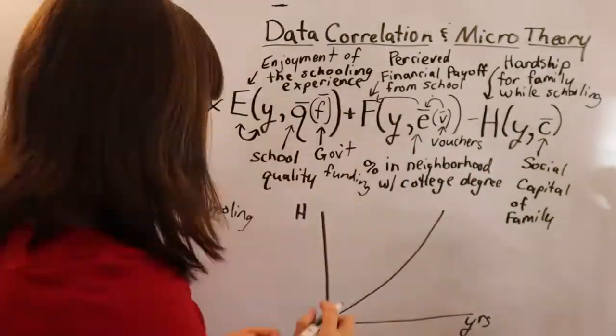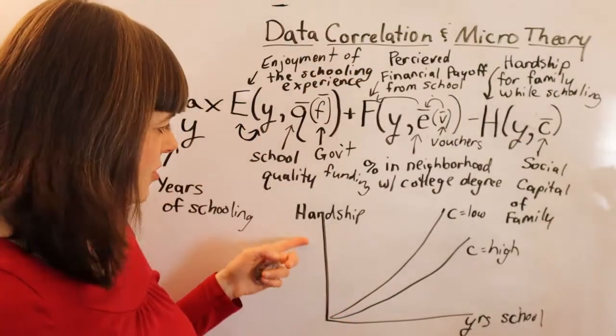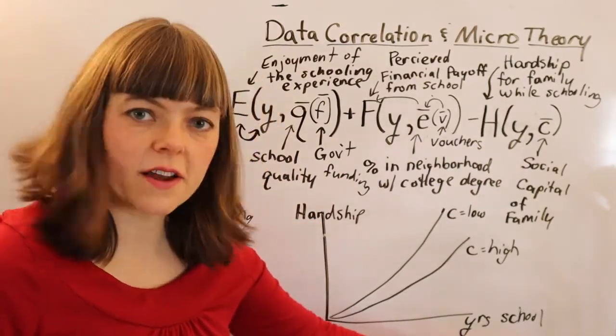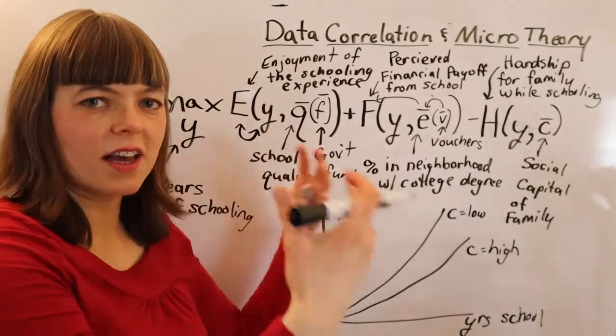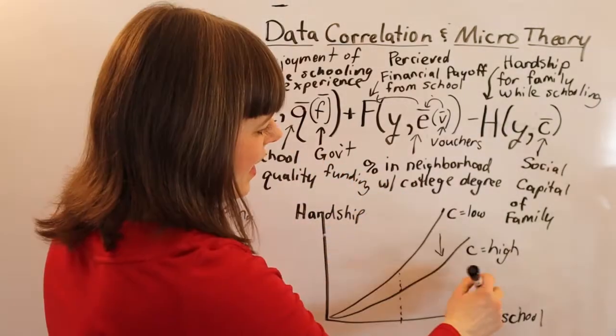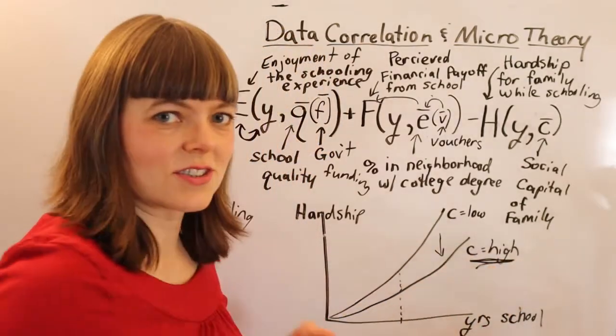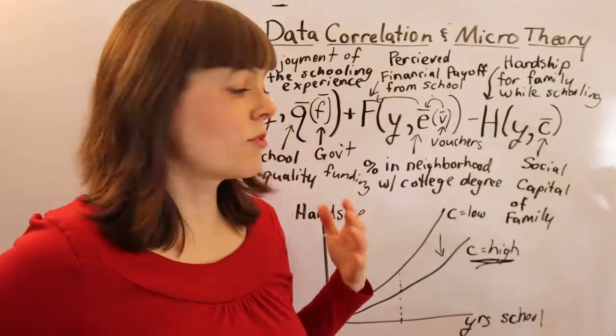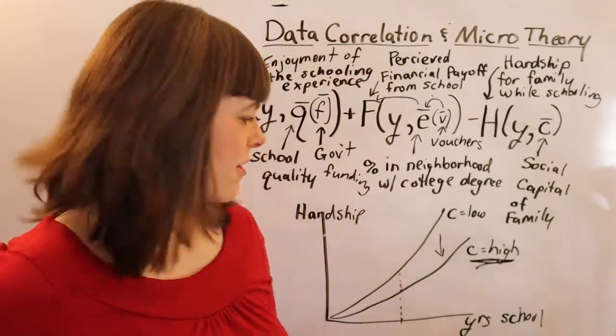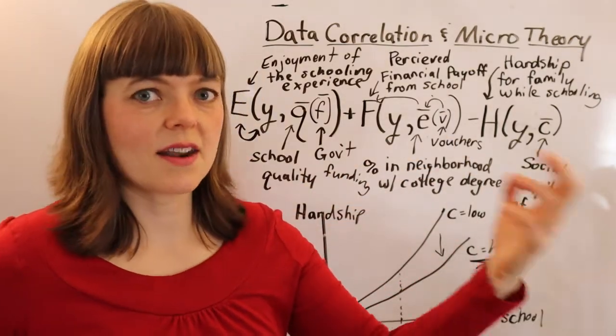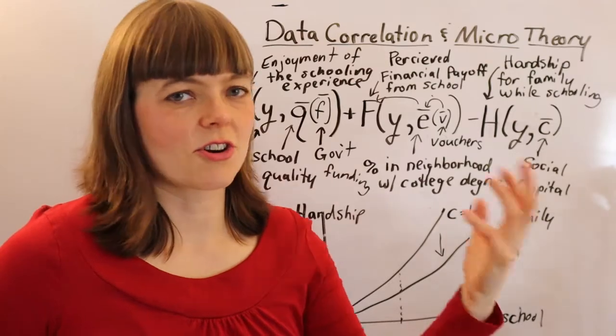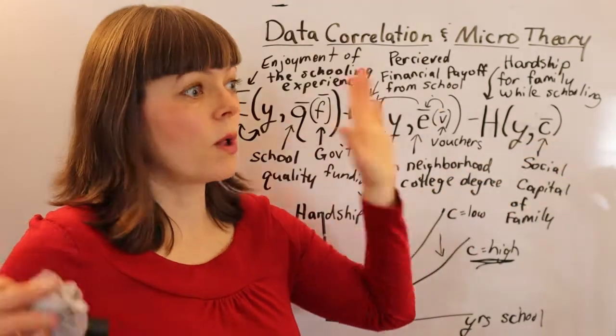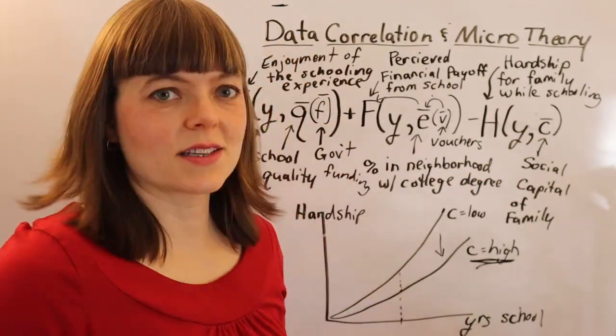Here we have our social capital graph where we've got hardship that the family experiences as a function of years that the student spends in school. This is collective hardship accumulated over time. As you raise the social capital, give them more connections with their churches, with their communities, with their neighbors, such that they have people they can rely on. That's going to reduce the hardship of the family and make it easier for the kid to go away to school and spend time studying rather than taking care of children and working to earn money to support the family. What kinds of government strategies could influence this? Well, that's probably a question that's beyond this particular video.